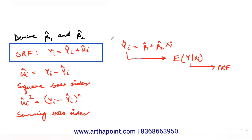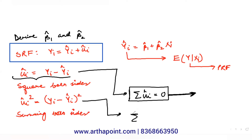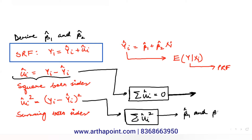Why are we not trying to minimize the error term directly to derive β1 hat and β2 hat? This is because on average, the error terms are zero — some are positive, some are negative, but they average out to zero. Because the average is zero, we cannot minimize the sum of the error terms. The only way is to minimize the sum of the squared error terms.